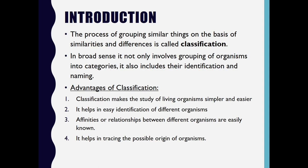The process of grouping similar things on the basis of similarities and differences is called classification. In a broad sense, it not only involves the grouping of animals into categories, but also includes their identification and naming. The advantages of classification are: it makes the study of living organisms simpler and easier, helps in easy identification, helps to know affinities or relationships between different organisms, and helps in tracing the possible origin of organisms.